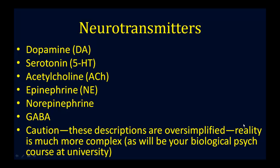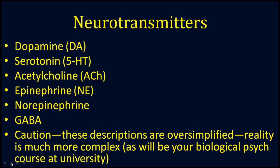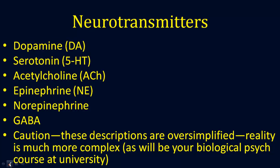This is a brief overview of the neurotransmitters that you're going to need to be familiar with for the AP Psychology test. First is going to be dopamine, which we'll be examining in a couple of slides, serotonin, acetylcholine, epinephrine, norepinephrine, GABA, and finally glutamate.